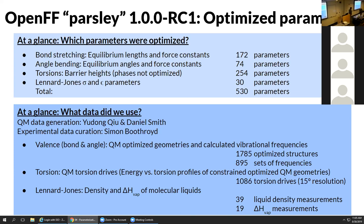One of the arguments we made for the SMIRNOFF format from very early on is that it gives you a very compressed representation of a small molecule force field, and that the number of independent parameters is a lot smaller compared to indirect chemical perception that uses atom types.